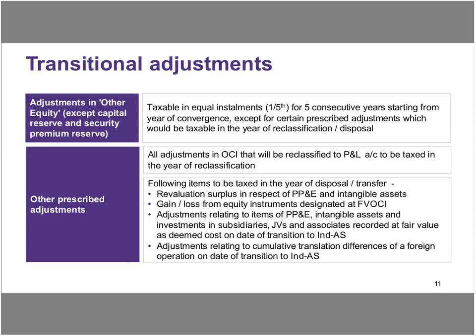For MAT purposes, transition amount has primarily been defined and contained to other equity. For the computation of transition amount, we will look at the items of other equity arising from your transition from IGAP to Ind AS. If there are adjustments in other equity, those are the ones which will go into computation of your transitional amount. The tax impact of transitional amount is: adjustments in other equity, except capital reserve and security premium reserve, will be considered taxable in equal installments for five consecutive years starting from the year of convergence, except for certain prescribed adjustments which would be taxable in the year of reclassification and disposal.